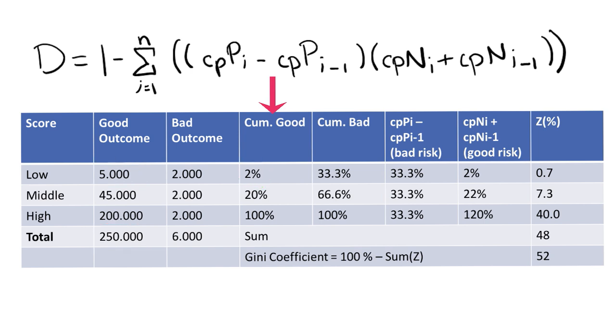In the next row, there's 45,000 customers with average credit scores. Then we add this 45,000 with the 5,000 customers before to obtain 50,000. And we divide this 50,000 again with the total number of customers, 250,000, and we obtain a cumulative good score of 20%. In the third row, we add 200,000 with 45,000 and 5,000, and we obtain 250,000, which when divided by 250,000 gives us a cumulative good score of 100%. So we see that the cumulative good column represents the cumulative percentage of customers with good outcomes.